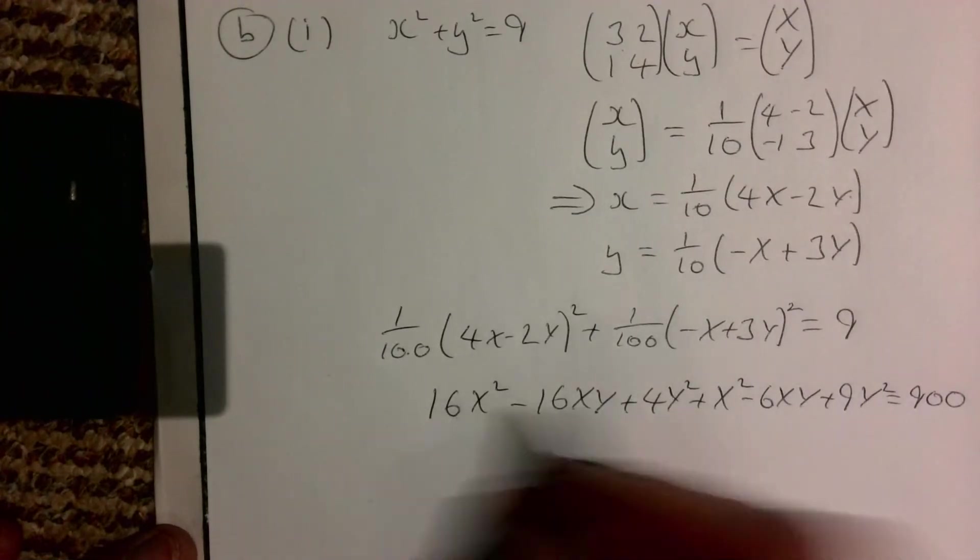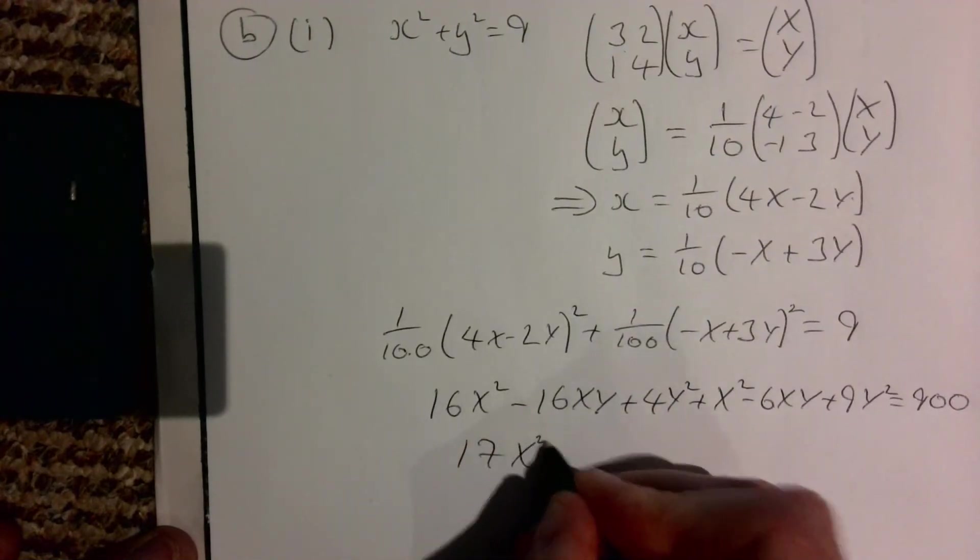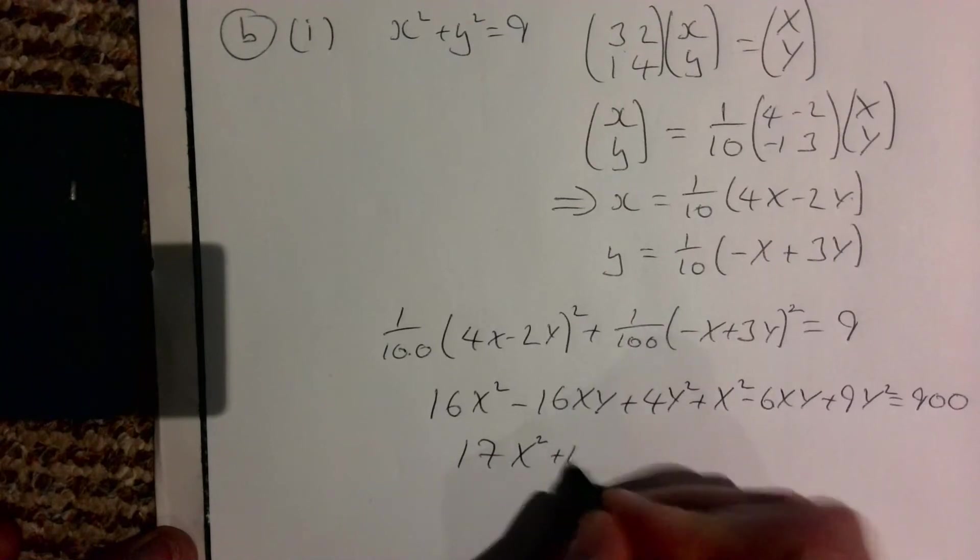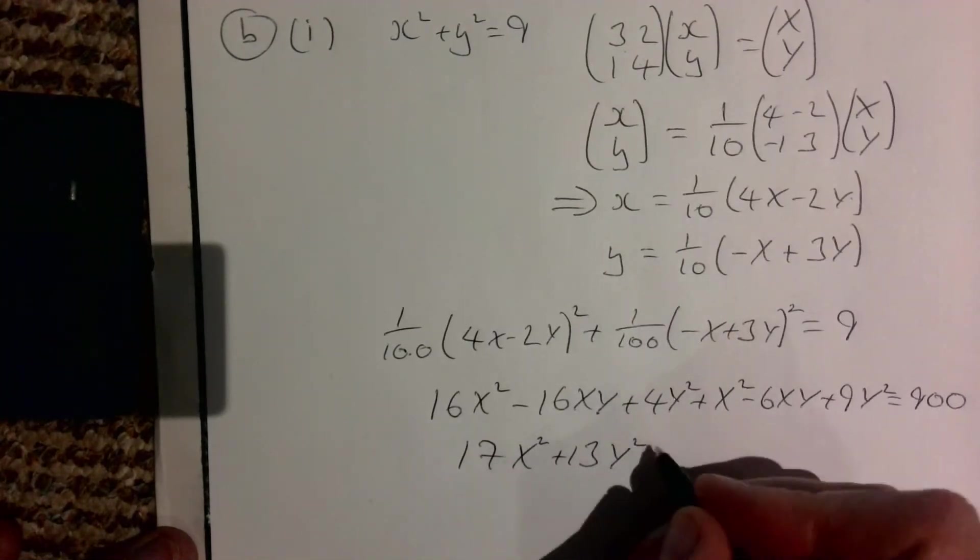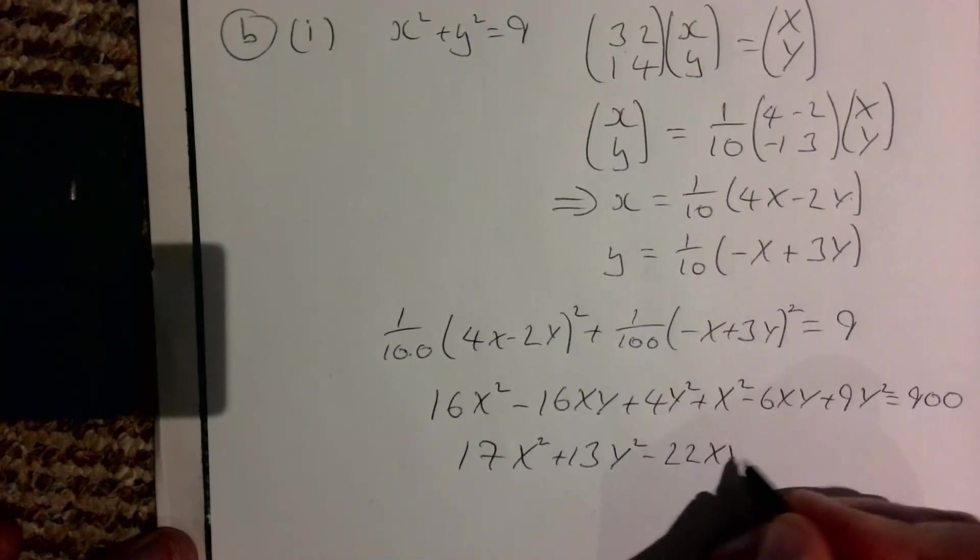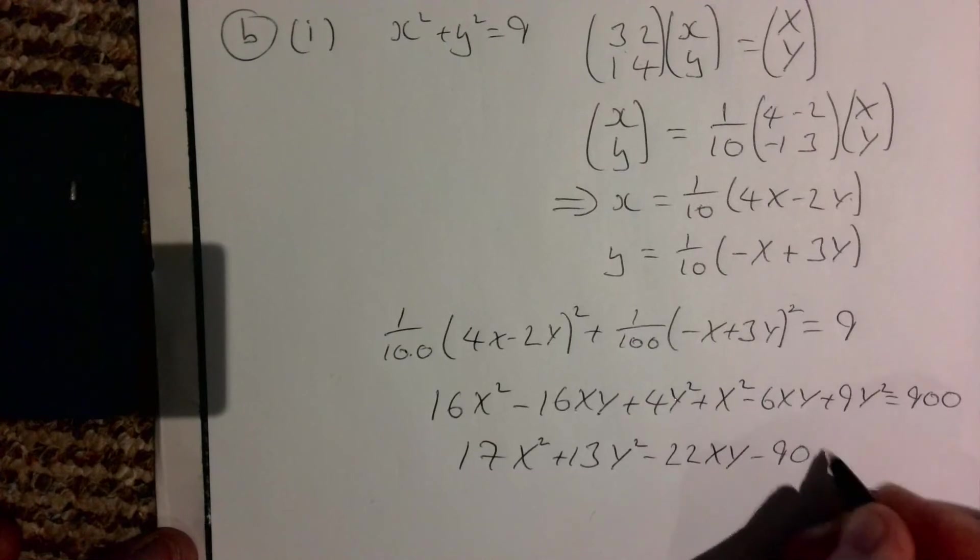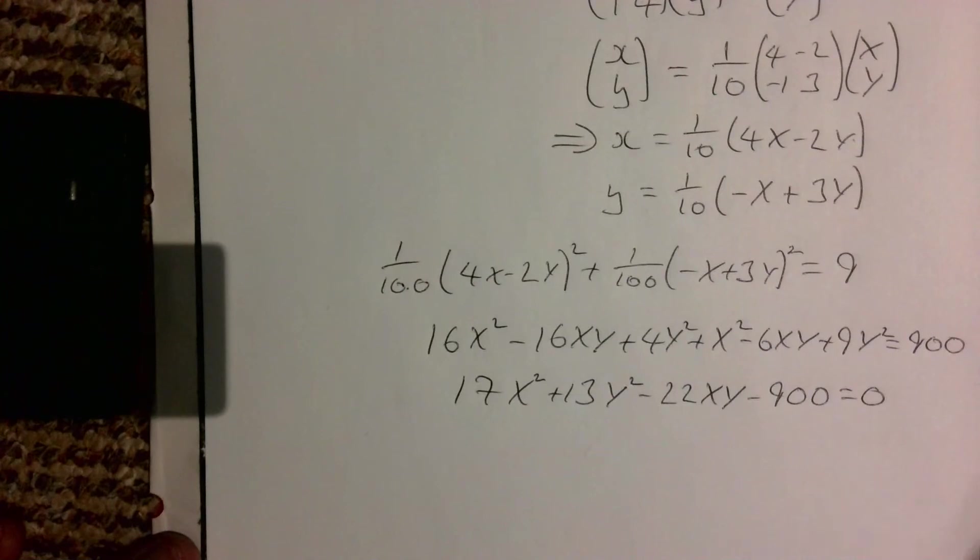Rearranging that and getting all the like terms together, we end up then with 17x² + 13y² - 22xy - 900 = 0, and that's the image of this shape that we're looking for.